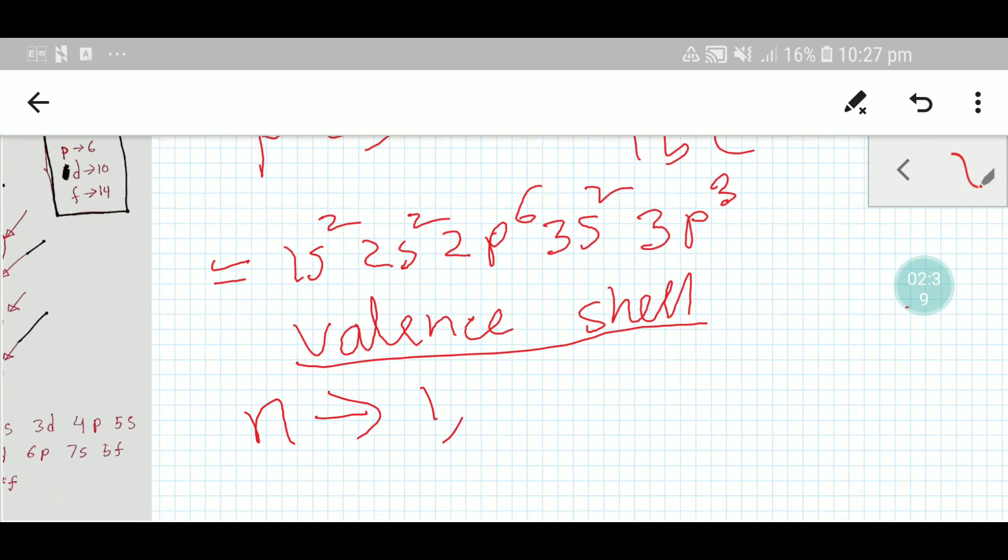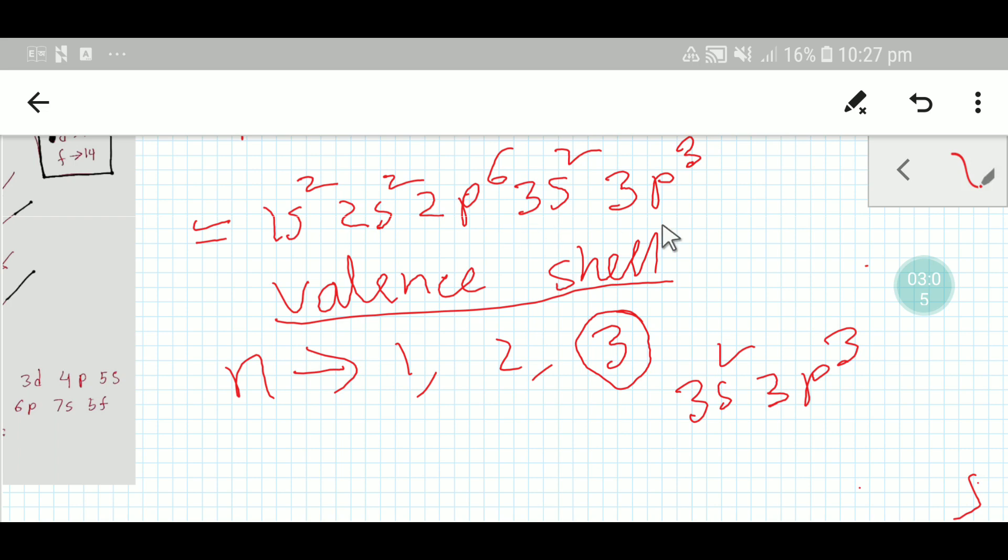Here we are getting 1, 2, 3. And for valency shell, we know that valency shell is the outermost shell, so we have to consider the highest value of valency shell. So here the valency shell is 3. This means 3s² 3p³.